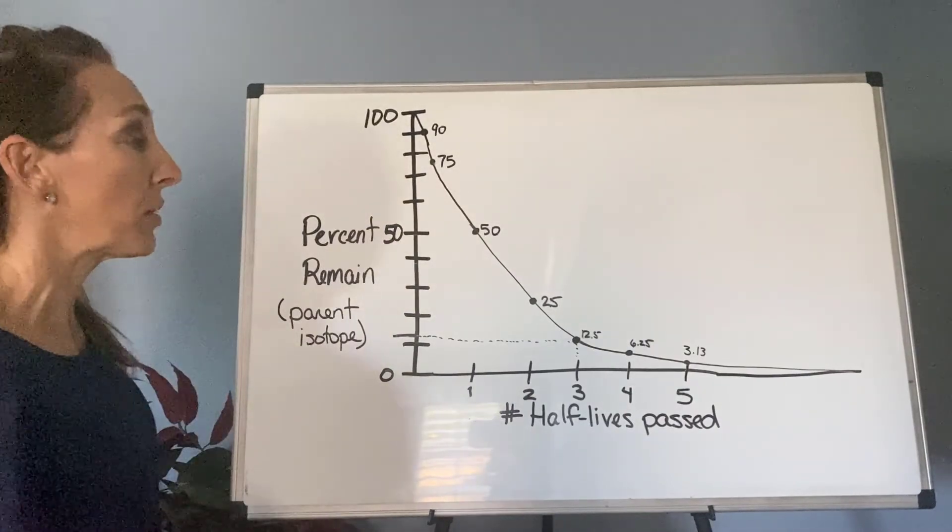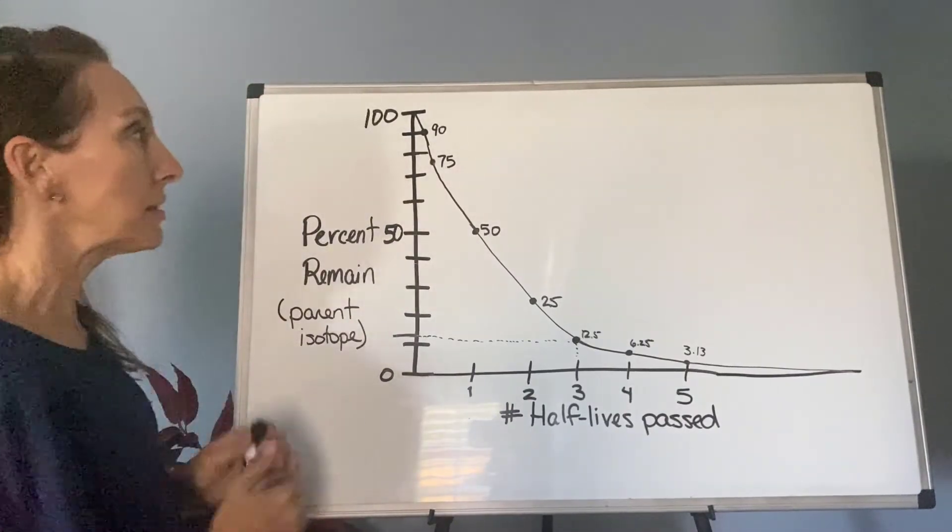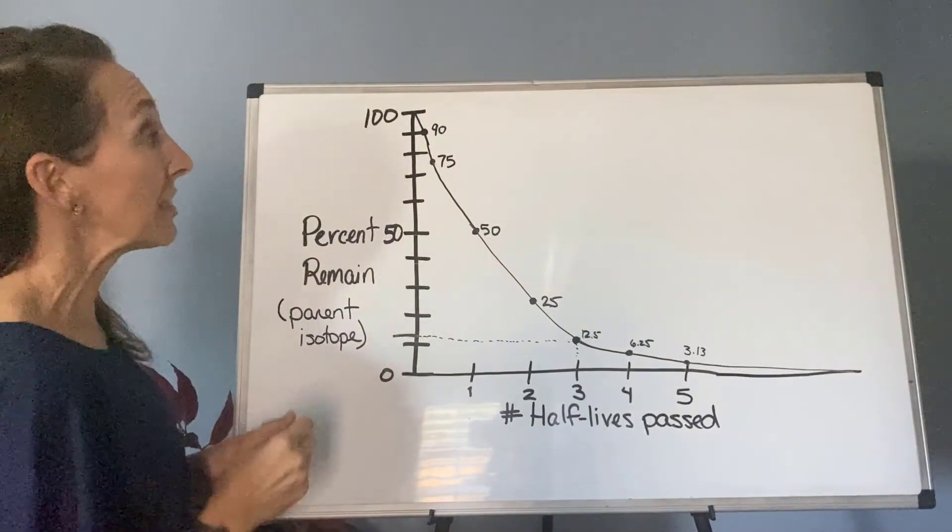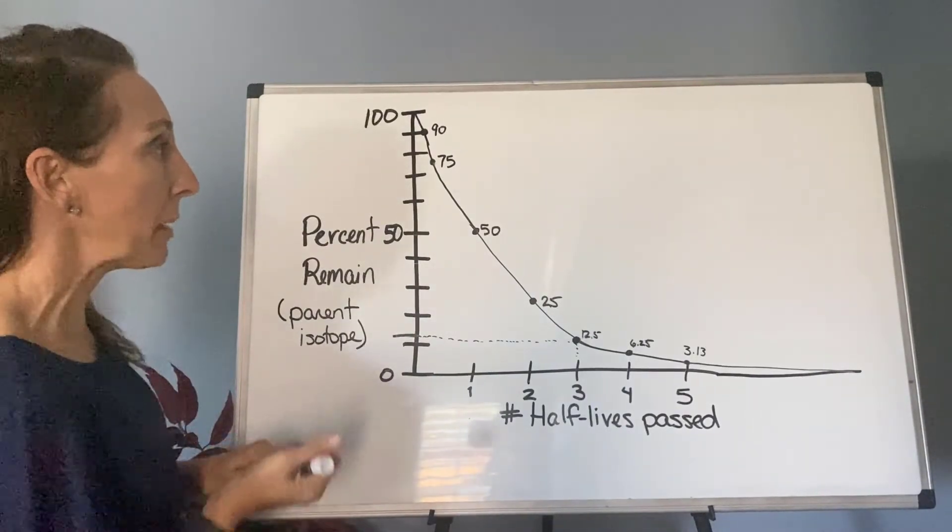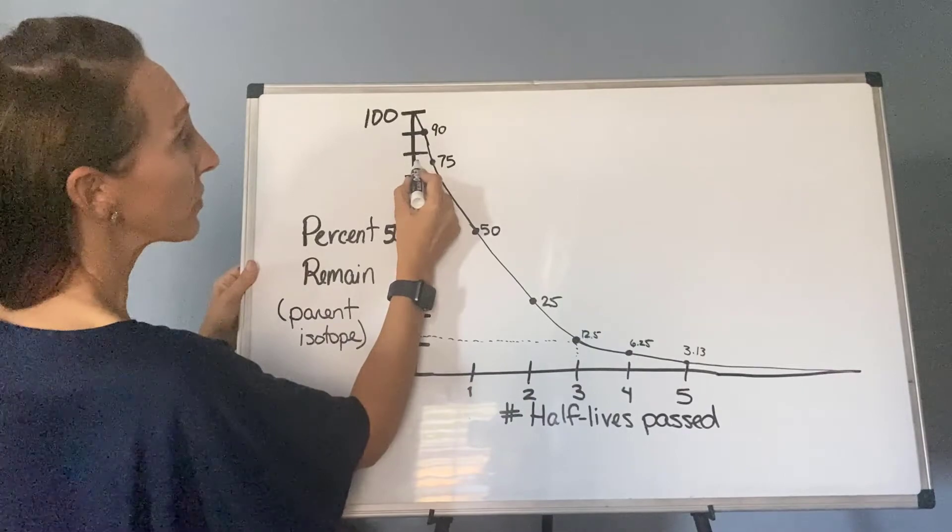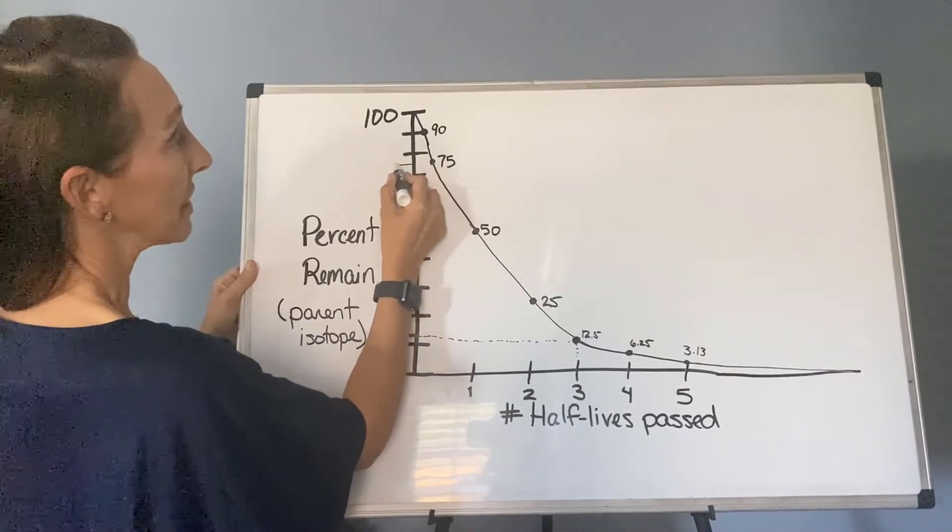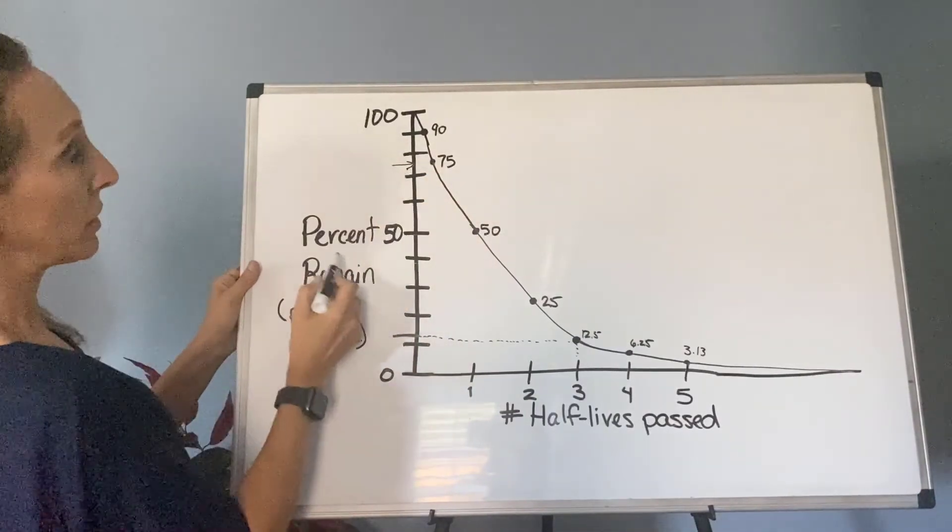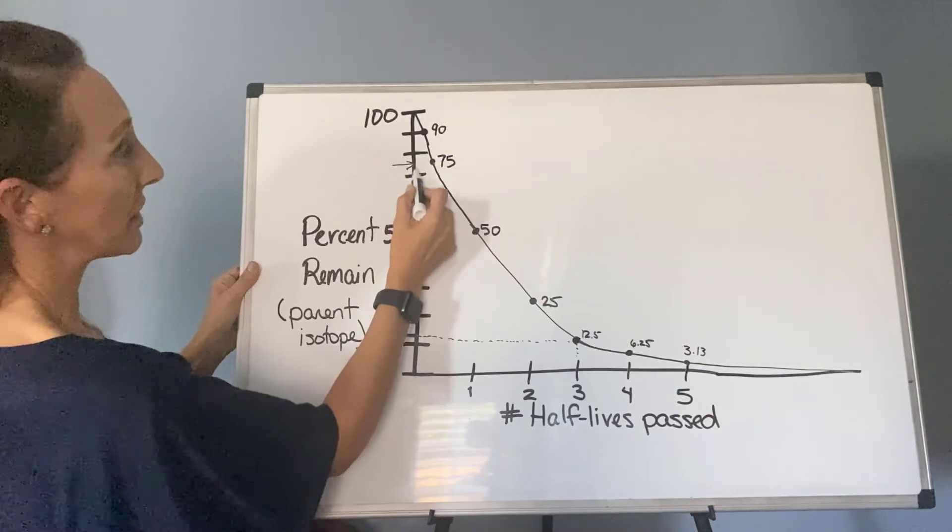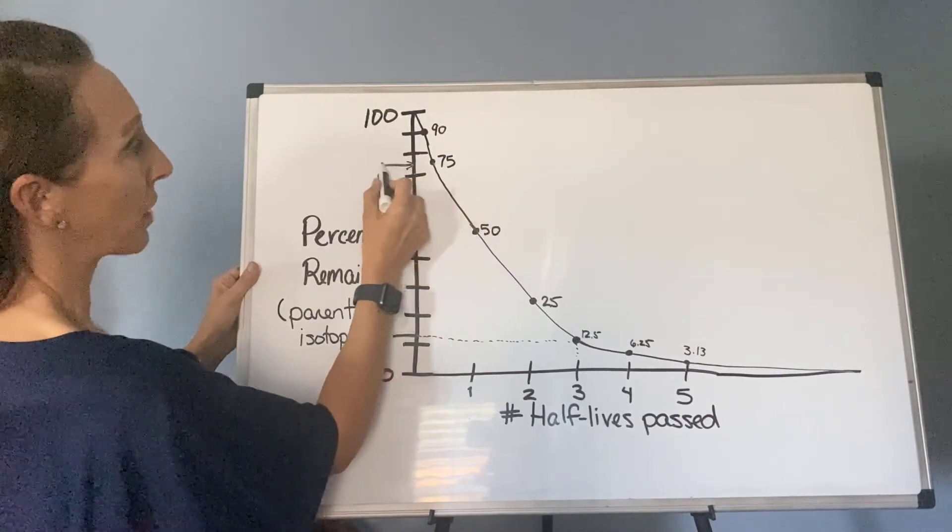And then we can actually go the other way around as well. So let's say that you have 75% remaining. I would come over here and find my 75, which would be right here - so 50, 60, 70, 80. So 75 is right in between.